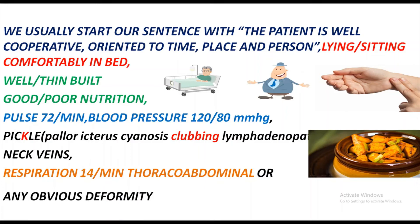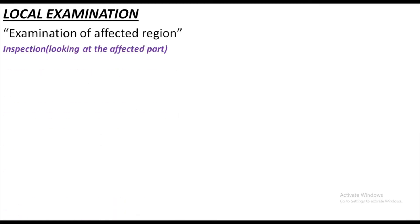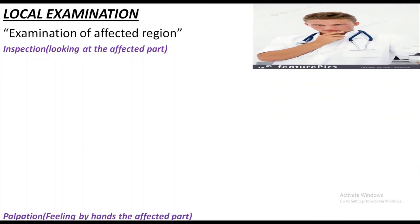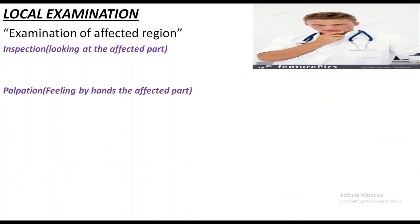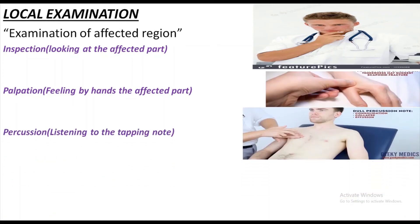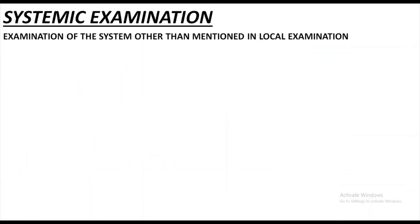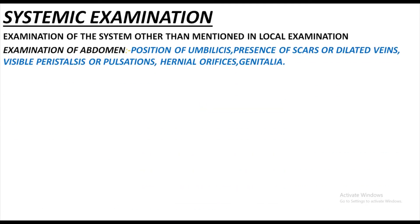Respiration, for example, is 14 per minute — note whether it is thoracic or abdominal — and any decubitus or obvious deformity. In local examination, you will examine the affected region. Inspection is just looking at the patient and trying to analyze findings. Palpation is feeling by hand. Percussion is tapping the affected area to get diagnostic clues. Auscultation is listening to sounds with the stethoscope.